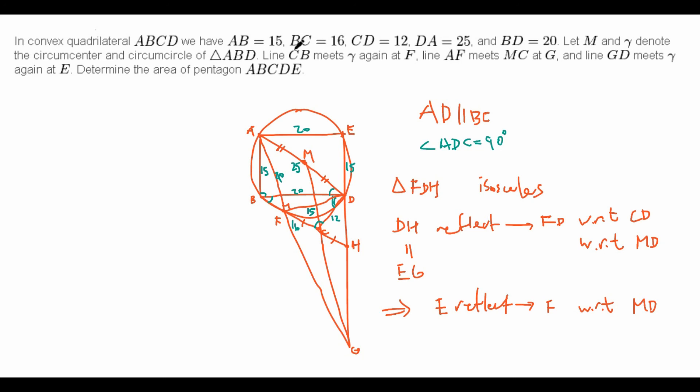And this helps us greatly, because we want to determine the area of pentagon ABCDE, but the area of pentagon ABCDE is just equal to the area ABDE plus the area of BCD. And what's the area of ABDE? Well, that's just 20 times 15. And what's the area of BCD? Well, that's just 12 times 16 over 2.